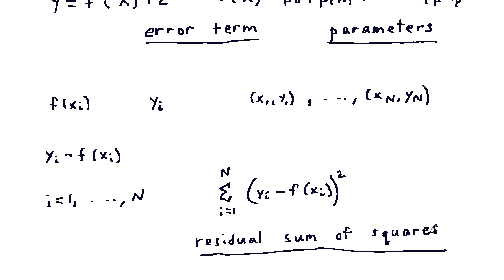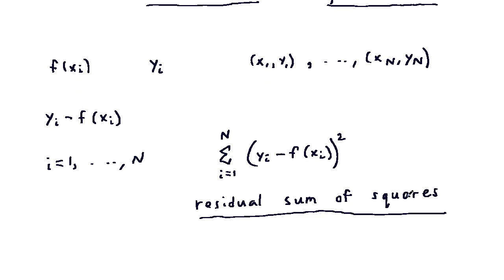And it's denoted RSS of beta, where beta is the column vector of beta 0, beta 1, to beta p.